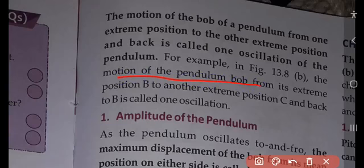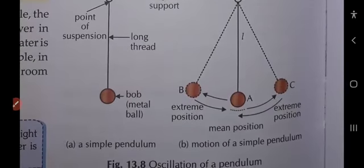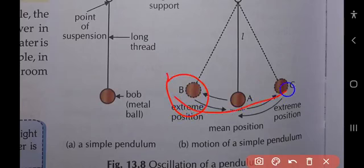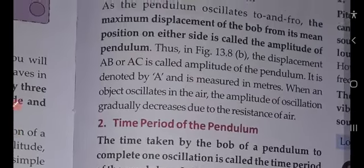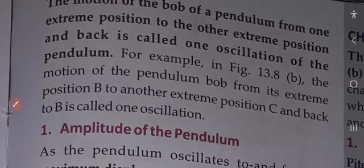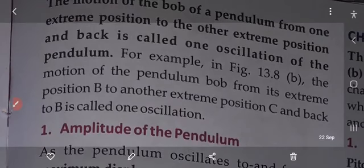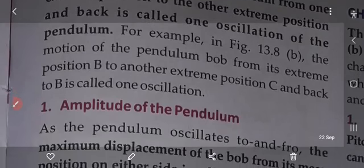For example, the motion of the pendulum bob from its extreme position B to another extreme position C and back to B is called one oscillation, as shown in the diagram. So the path B to C and back to B constitutes one complete oscillation.